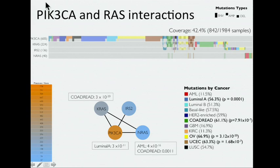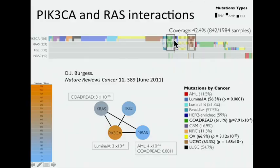This is PIK3CA and RAS. We also compute whether there's enrichment for individual cancer types in this subnetwork. These p-values you should take with a grain of salt because we have filtered the mutations, but it does show at least some trend of some cancer-specific biases in these subnetworks. We also see whether, conditional on the number of mutations in this cancer type, there are any gene-specific biases. NRAS is preferentially mutated in AML, while KRAS is preferentially mutated in colorectal, and the luminal A subtype of breast cancer with a PIK3CA mutation. There is a strong pattern of mutual exclusivity, but also co-occurrence that's allowed here.